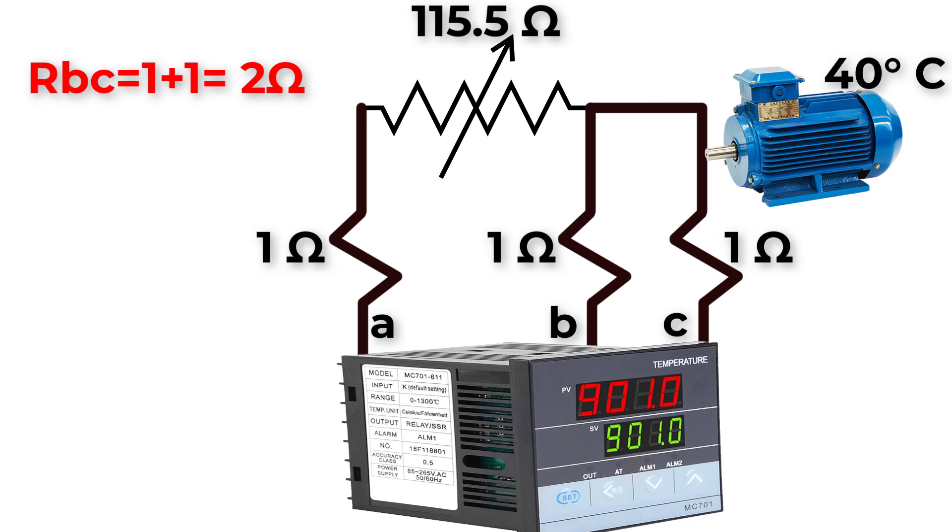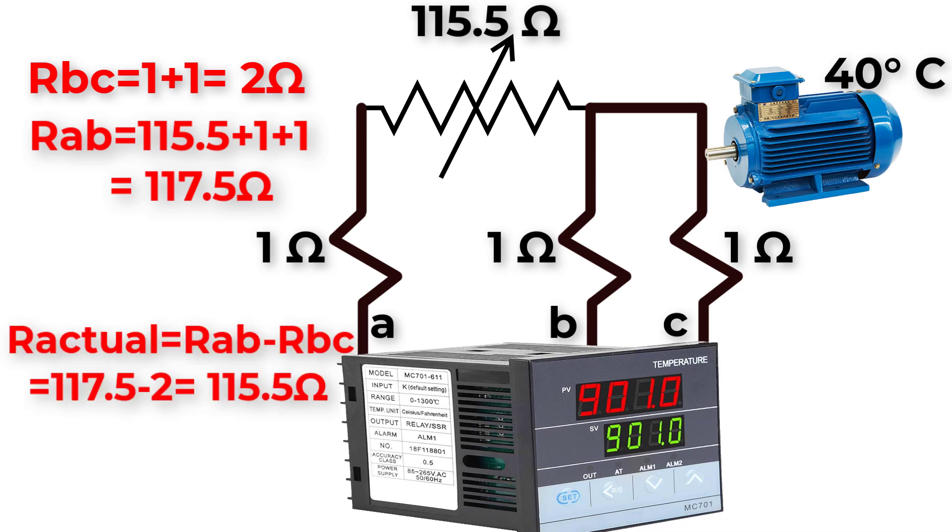Now, the device will measure resistance between A and B, which will equal 115.5 ohm plus 1 ohm plus 1 ohm, which is equal to 117.5 ohm. Now, the actual resistance will equal RAB minus RBC, which is equal to 117.5 ohm minus 2 ohm, which will equal 115.5 ohm.